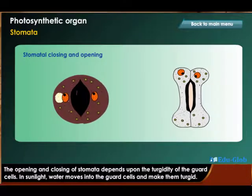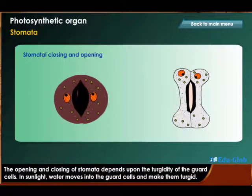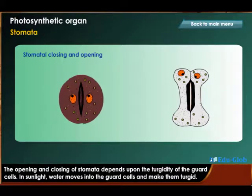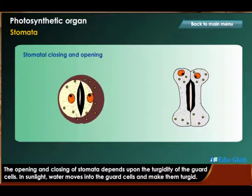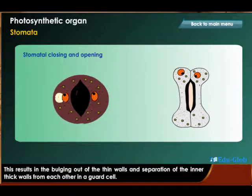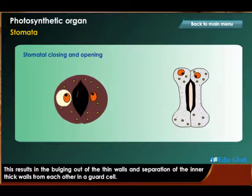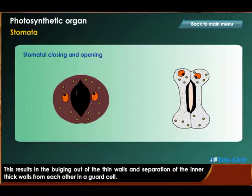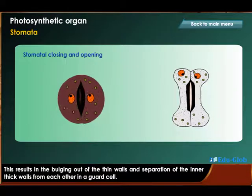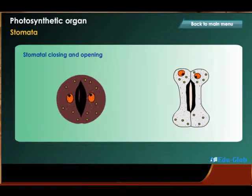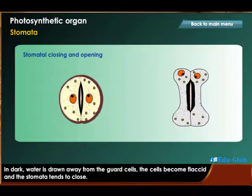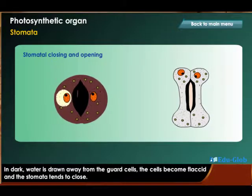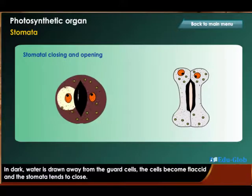The opening and closing of stomata depends upon the turgidity of the guard cells. In sunlight, water moves into the guard cells and makes them turgid. This results in the bulging out of the thin walls and separation of the inner thick walls from each other in a guard cell. In the dark, water is drawn away from the guard cells; the cells become flaccid and the stomata tend to close.